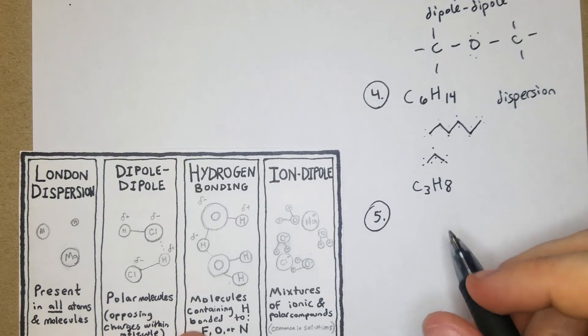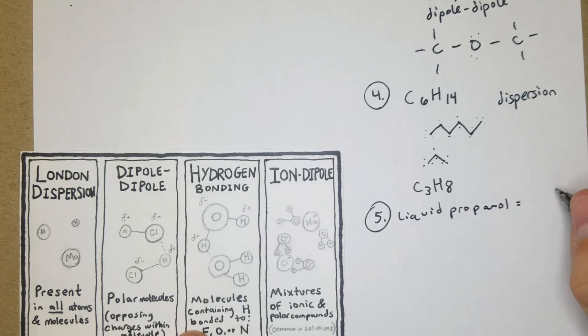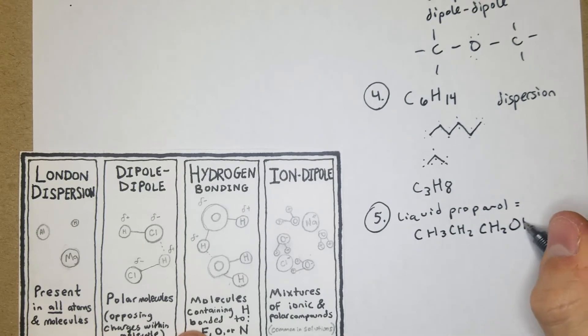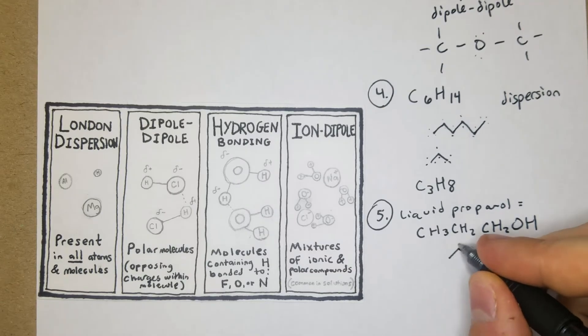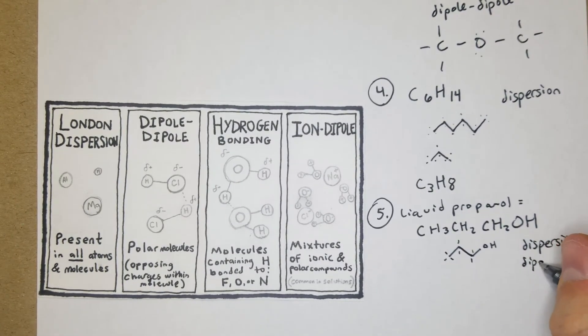For 5, we'll do liquid propanol, which is going to be CH3CH2CH2OH. Here you see that hydroxide on the end. It looks like it's probably just a carbon chain - 1, 2, 3 - OH. It's got that OH though and it's asymmetrical, which isn't really the best way to determine if it's going to be dipole-dipole, but in this case it will be. So we're going to have the dispersion forces, dipole-dipole, and hydrogen bonding.